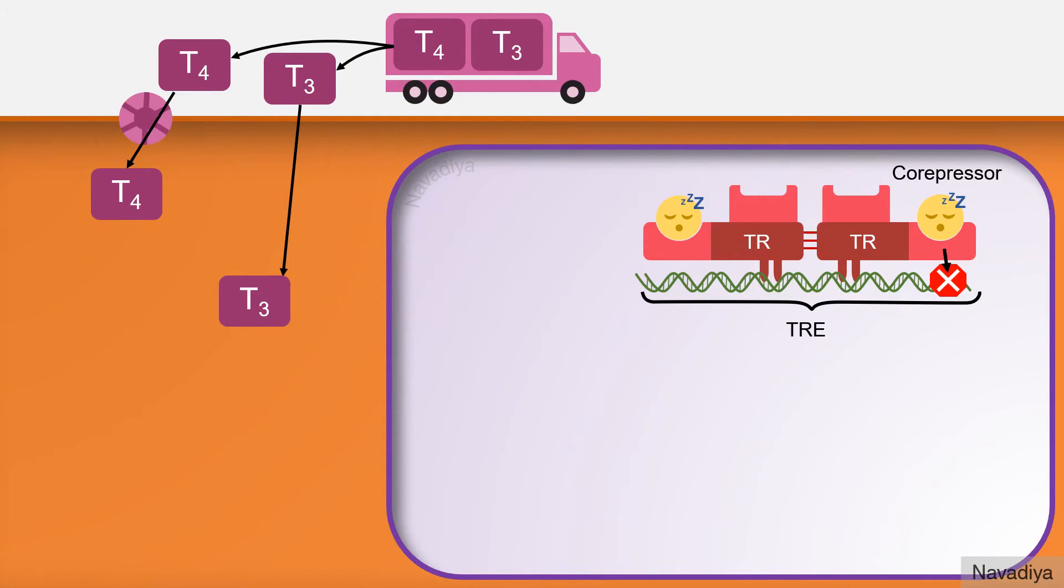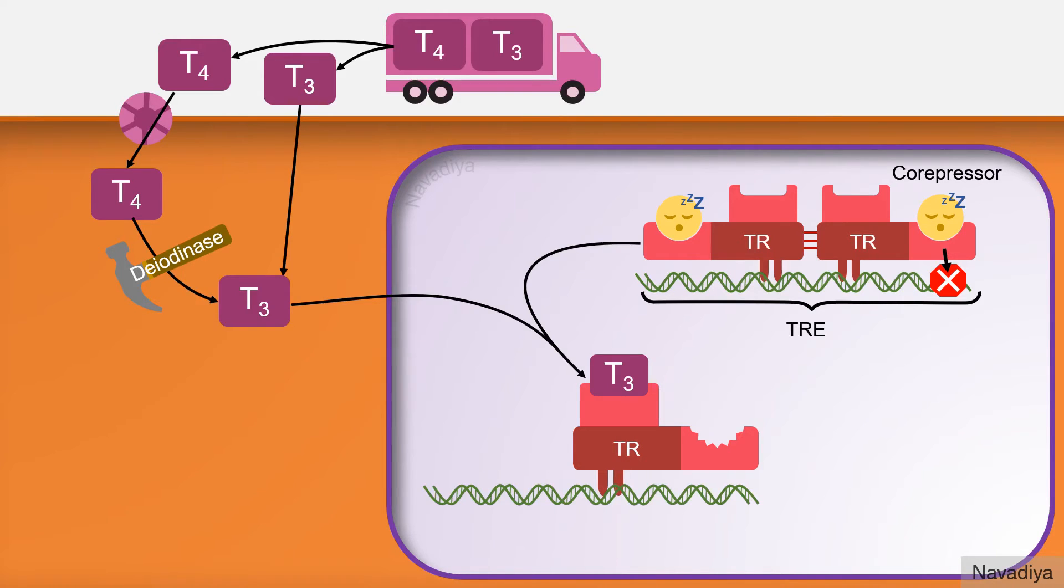The thyroid hormones enter into the cell passively or by active transport by some non-specific transporters. T4 is converted into T3 by deiodinase enzymes. T3 binds with the thyroid hormone receptor which causes disruption of homodimer and formation of heterodimer with retinoid X receptor.